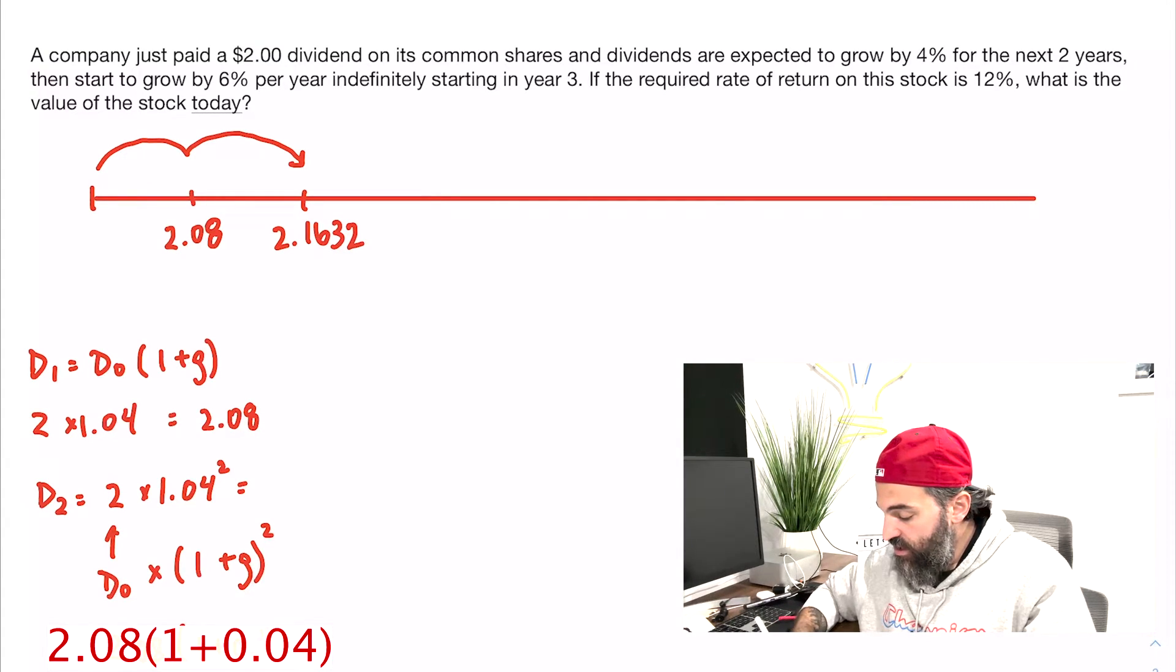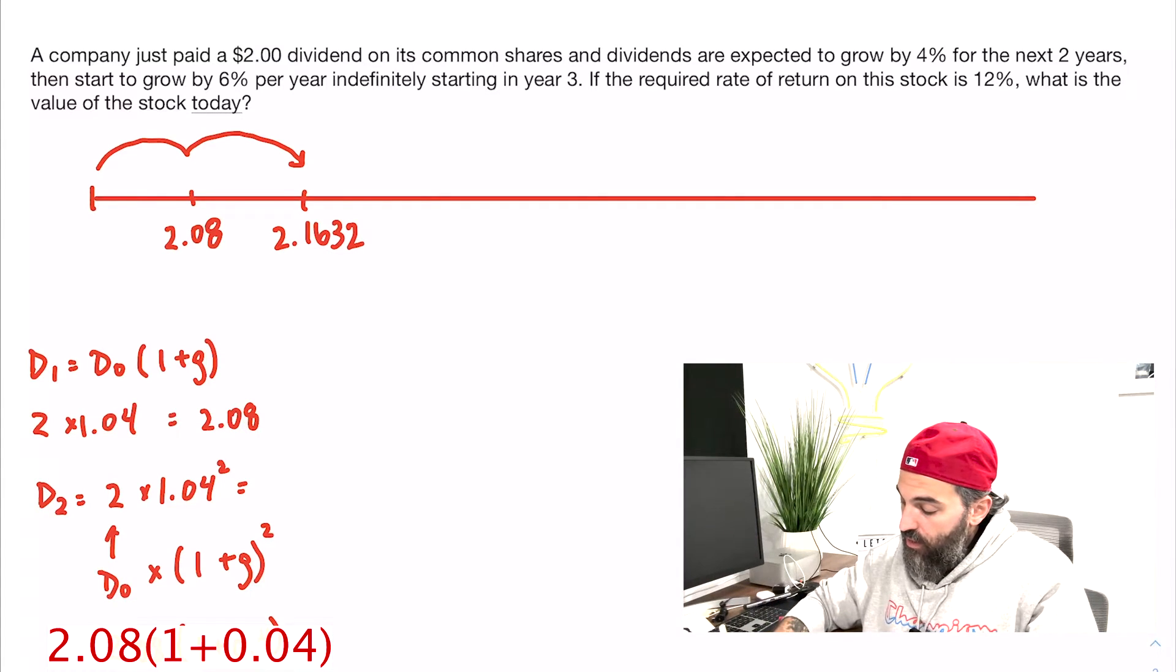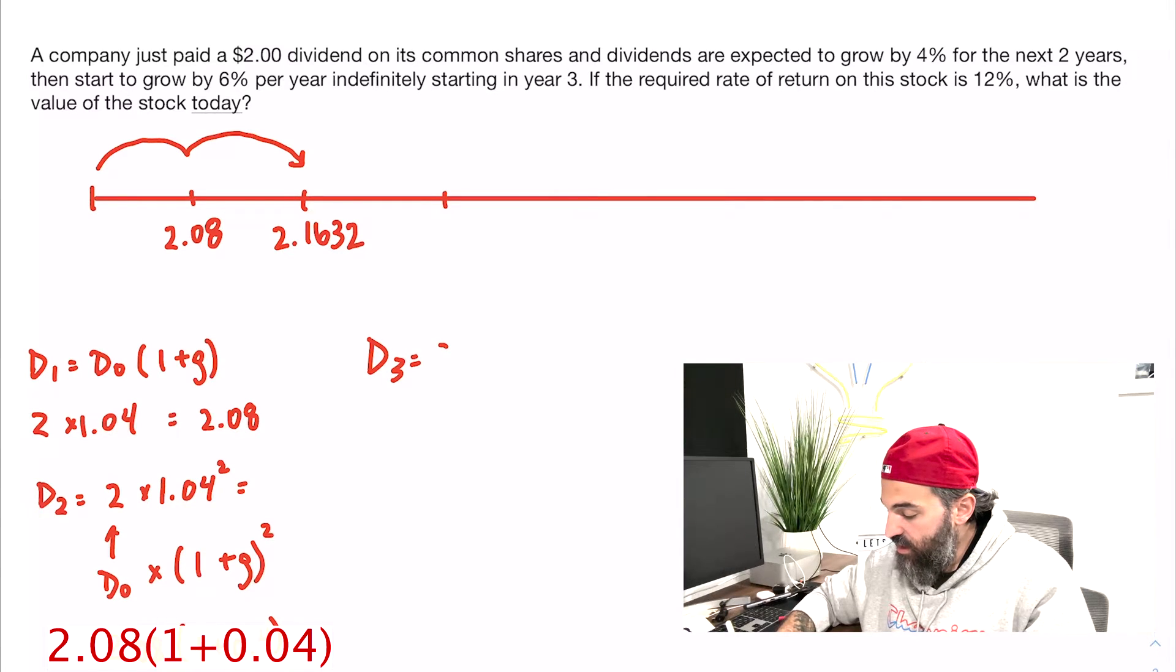Now the year after, it says the stock is going to start growing at 6%. So to find D3, I'll take my D2 and multiply that by one plus 0.06.